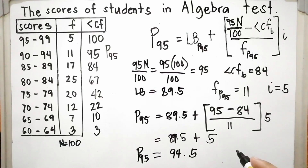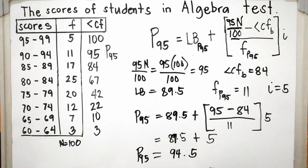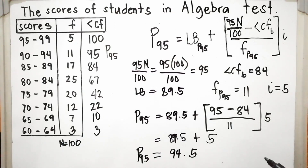That means 95% of the students got a score of 94.5 and below, or less than or equal to 94.5.